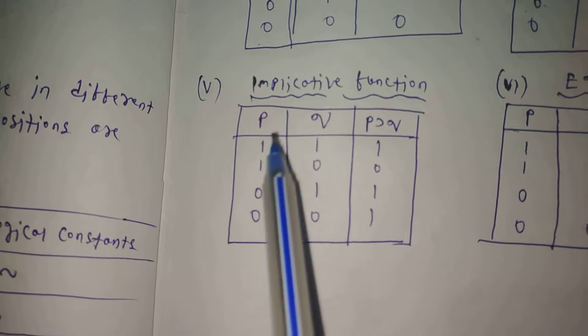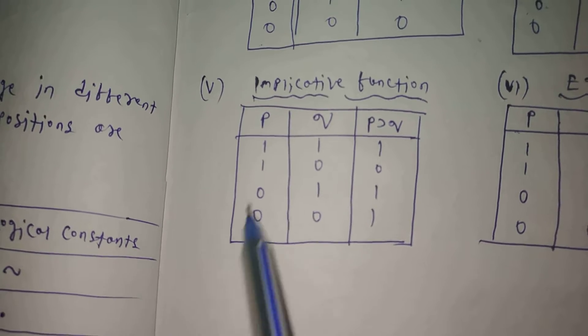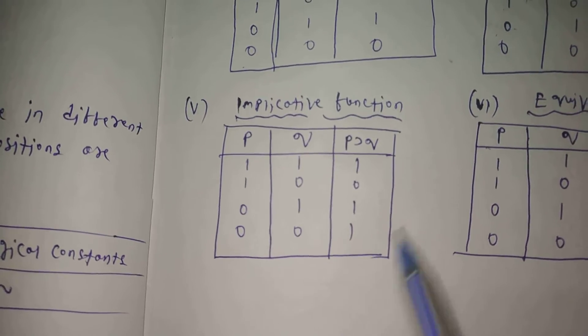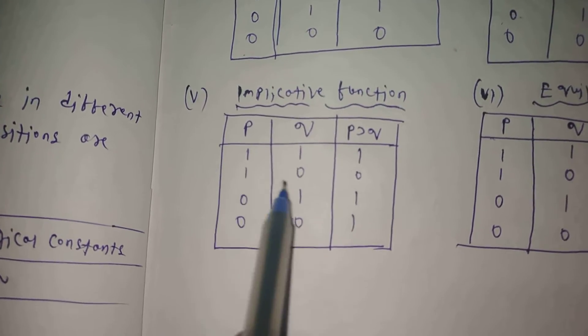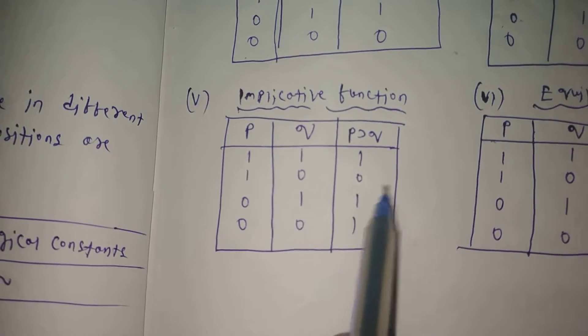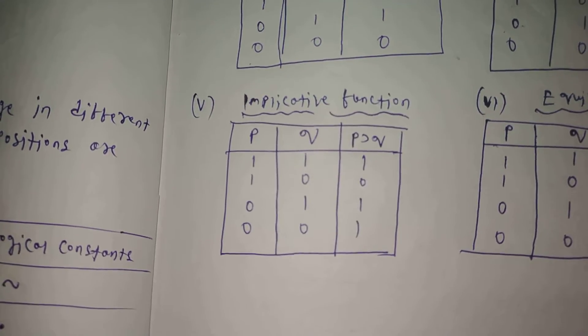The implicative function: P takes values 1, 1, 0, 0 and Q takes values 1, 0, 1, 0. P implication Q gives values 1, 0, 1, 1.